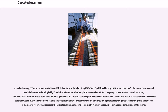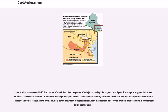A medical survey on cancer, infant mortality, and birth sex ratio in Fallujah, Iraq 2005–2009, published in July 2010, states that increases in cancer and birth defects are alarmingly high, with infant mortality in 2009–2010 reaching 13.6%. The group compares the dramatic increase five years after wartime exposure in 2004 with a lymphoma that Italian peacekeepers developed after the Balkan wars and the increased cancer risk in certain parts of Sweden due to the Chernobyl fallout. The report mentions depleted uranium as one potentially relevant exposure but makes no conclusions on the source. Four studies in the second half of 2012 — one of which described the people of Fallujah as having the highest rate of genetic damage in any population ever studied — renewed calls for the US and UK to investigate possible links between their military assault on the city in 2004 and the explosion in deformities, cancers, and other serious health problems. Despite the known use of depleted uranium by allied forces, no depleted uranium has been found in soil samples taken from Fallujah.